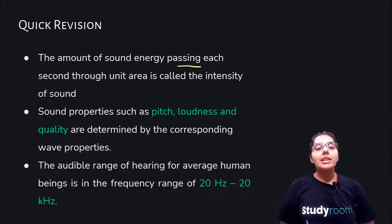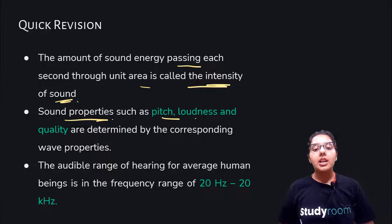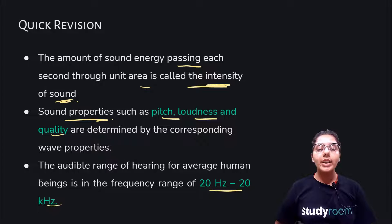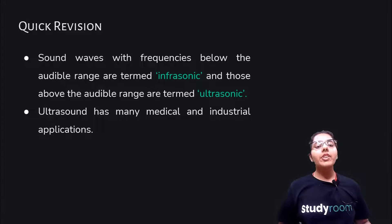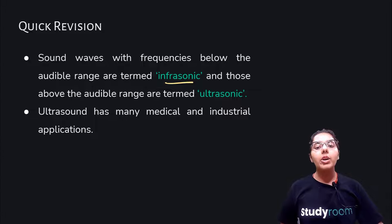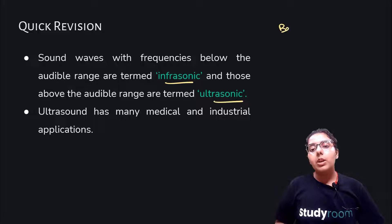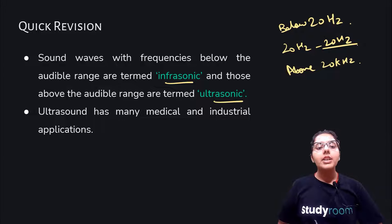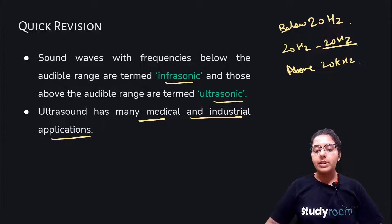The amount of sound energy passing each second through unit area is called the intensity of sound. Properties of sounds — pitch, loudness, quality, amplitude — are determined by corresponding wave properties. The audible human range is 20 hertz to 20 kilohertz. Sound wave frequencies below the audible range are infrasonic; above the audible range are ultrasonic. Below 20 hertz: infrasonic. 20 hertz to 20 kilohertz: human range. Above 20 kilohertz: ultrasonic. Ultrasound has many medical and industrial applications.